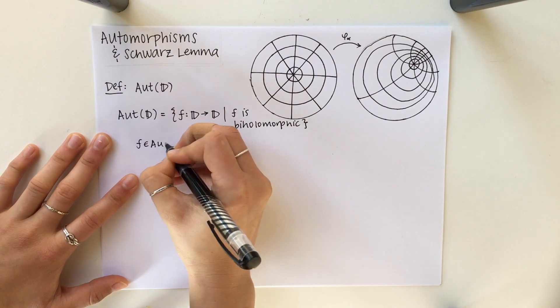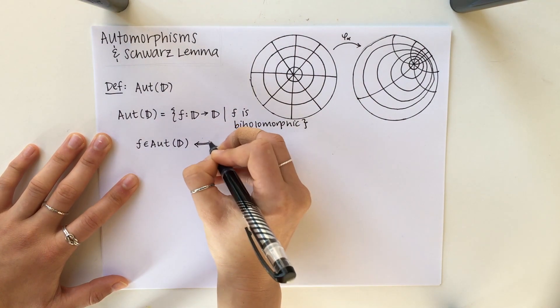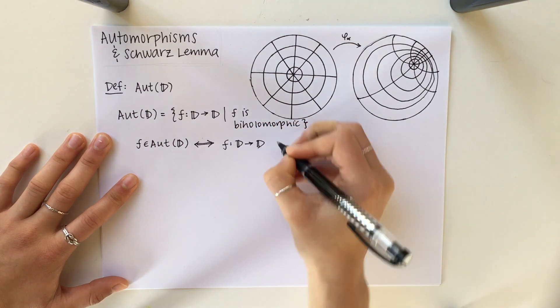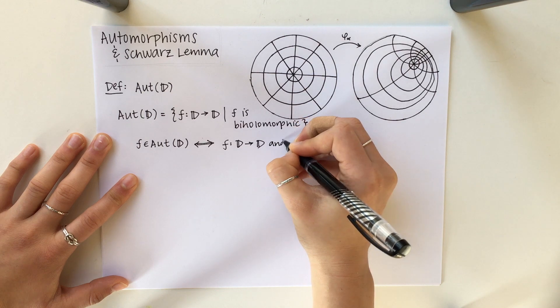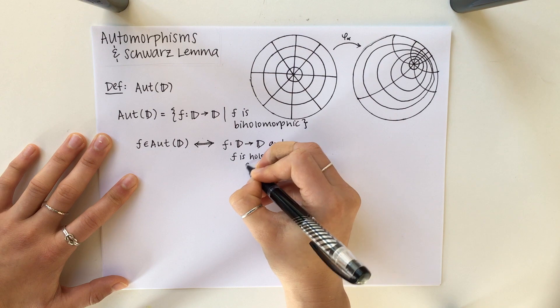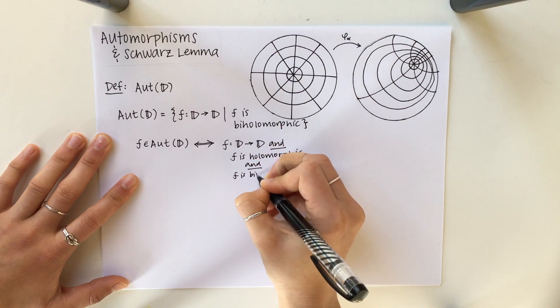One quick note, I used to think that F is in automorphism of D is equivalent to saying that F just maps D to D, but because of our definition that's not true. You also need to include that F is holomorphic and that F is bijective, and then those two statements are equivalent.